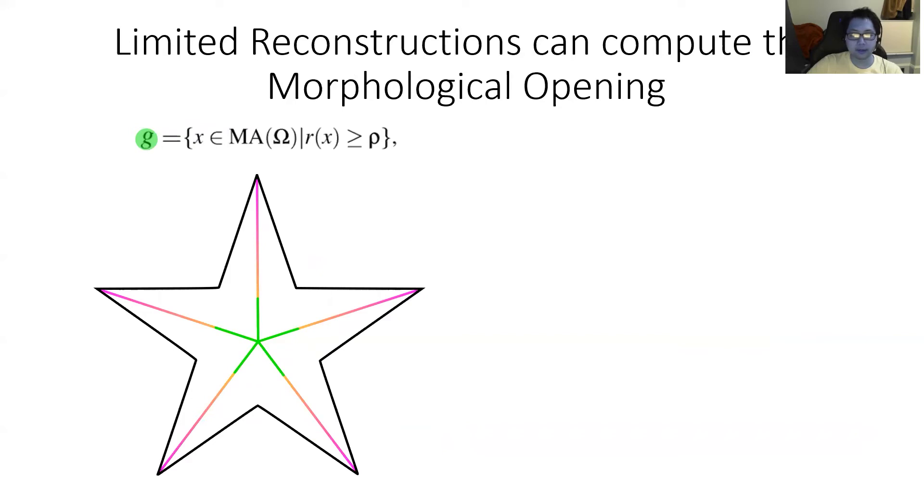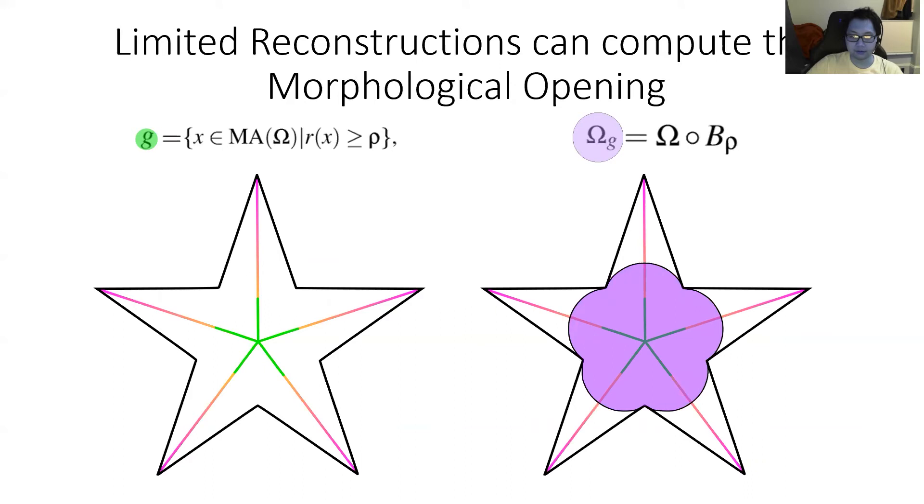Maybe you're thinking the medial axis and limited reconstructions don't seem to have anything to do with the isoperimetric profile. In fact, they are related through the morphological opening. If you choose G to be the subset of medial axis points whose radii are larger than a threshold rho, then the limited reconstruction is exactly the morphological opening of that domain with a ball of radius rho. This means that it is possible to compute the isoperimetric profile of a no-neck domain by using limited reconstructions. The intuition to keep in mind here is that constructing minimal perimeter subdomains seems to involve subsets of the medial axis with the largest radius. This observation leads to our algorithm.